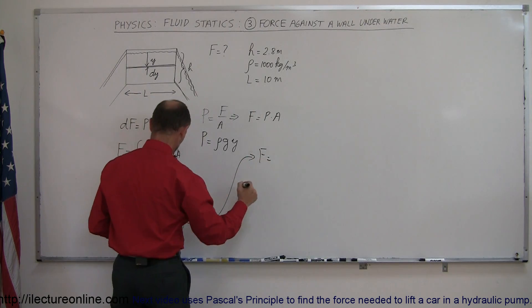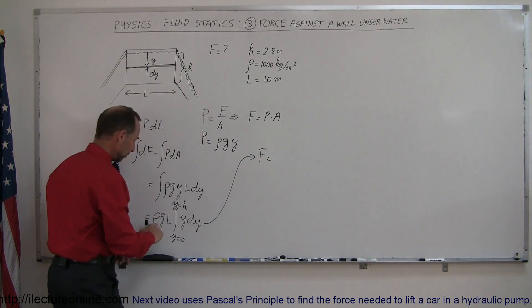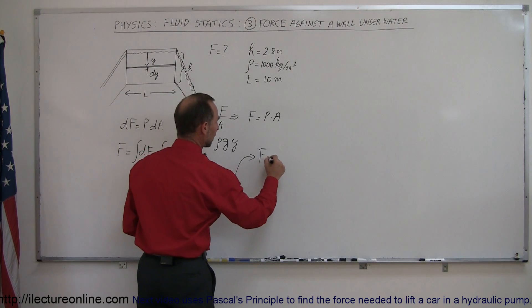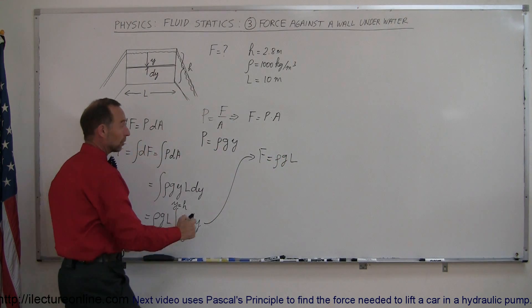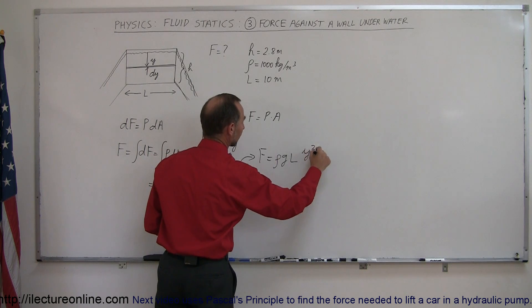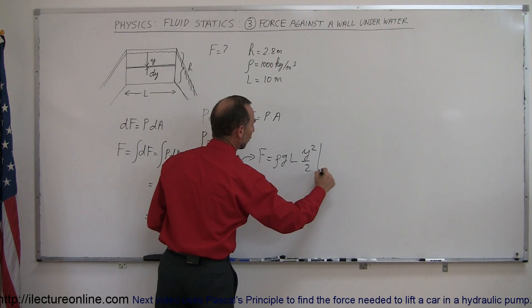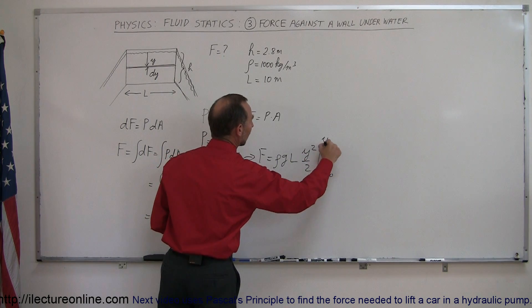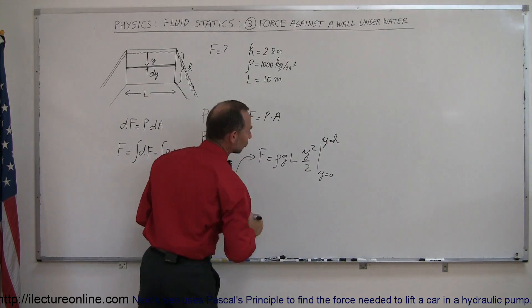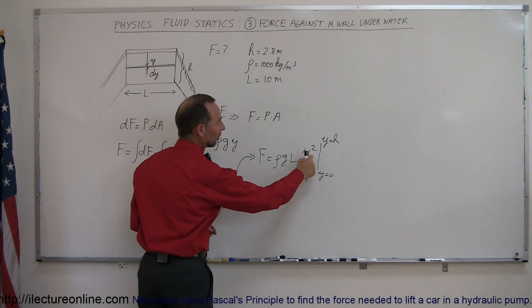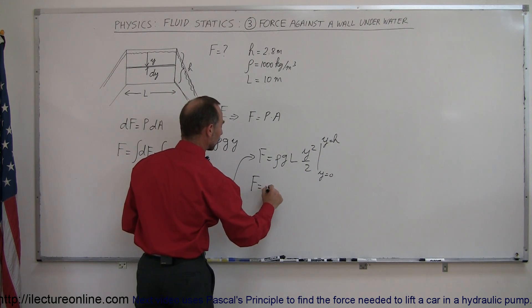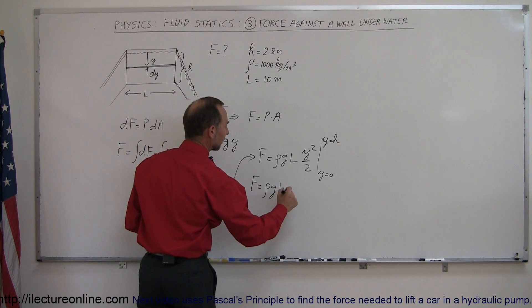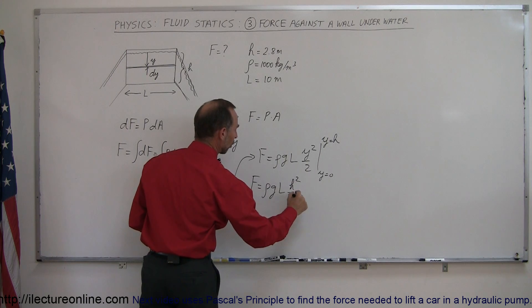we still have ρgL, so that would be ρgL times the integral of y dy, which is y squared over 2, evaluated from y equals 0 to y equals the depth of the pool h. Of course when we plug in 0 we get 0, so simply we plug in the upper limit, and so the force on that wall is equal to ρgL times h squared over 2.